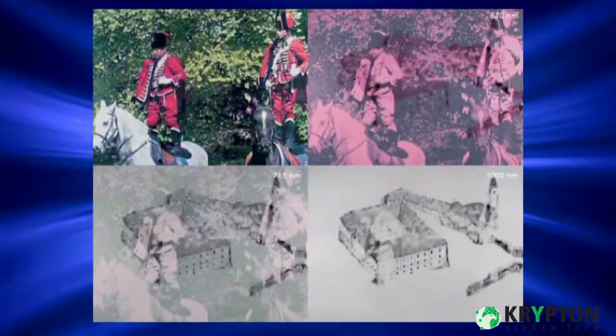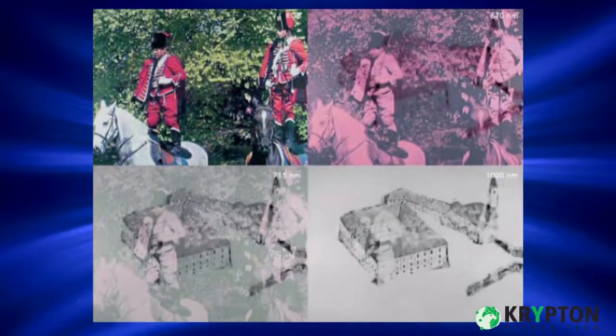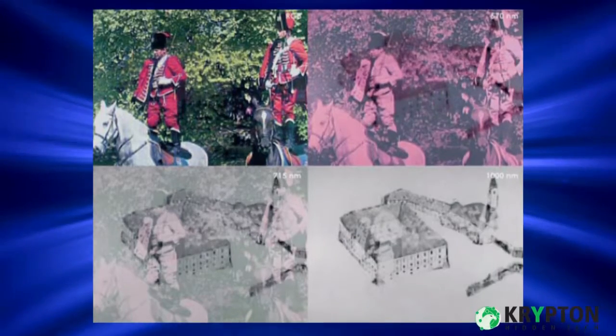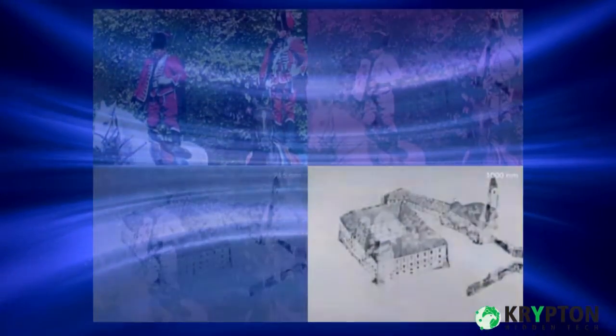In this example, one printed image carries a two-image display of information. While the original image is visible to the human eye, the other is only seen in the infrared range of the spectrum. Print with Krypton technology effect shown on the visible part of the spectrum, RGB, and the image of the old town invisible to human eyes with three filters: 570 nanometers, 715 nanometers, and 1000 nanometers.